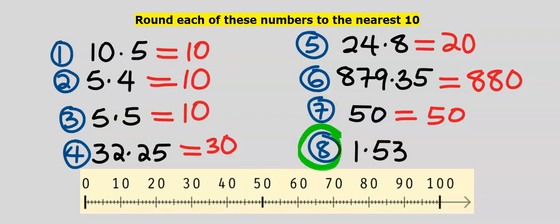Consider 1.53. 1.53 is between 0 and 10. Halfway between them is 5. 1.53 is less than 5 and is closer to 0 than to 10. The nearest ten of 1.53 is 0.